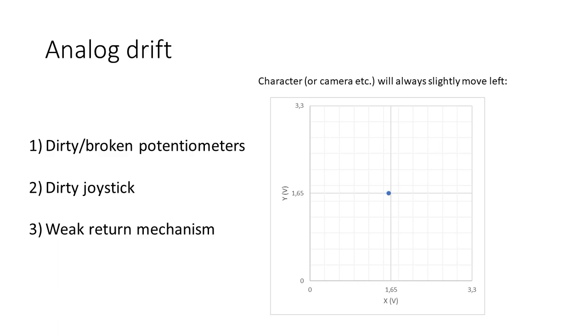Analog drift occurs when the resting position is not anymore exactly in the middle of both potentiometers even when the joystick is not being touched. In the example to the right it's visible how the resting position is slightly off center which causes the player or the camera to move slightly to the left.